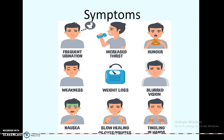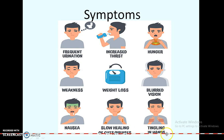What are the general symptoms of diabetes mellitus? Frequent urination, increased thirst, hunger, weakness, weight loss, blurred vision, nausea, slow healing of cuts and bruises, and tingling of the hands.